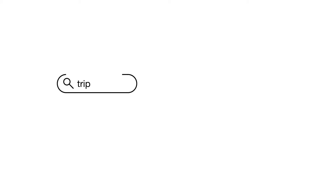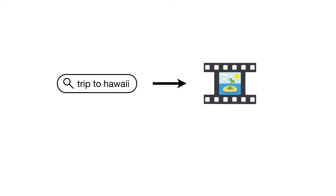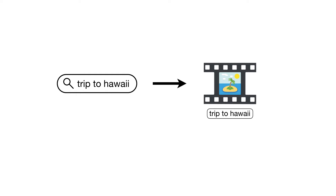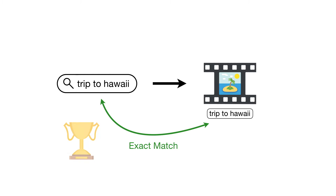YouTube takes the search term and matches it with your video. When someone uses that search term, YouTube sees your video as an exact match. This doesn't mean that you are ranking first, but you definitely are getting a boost.